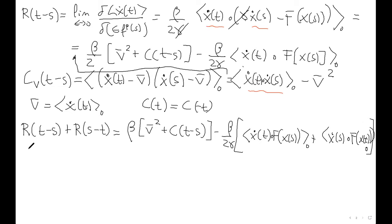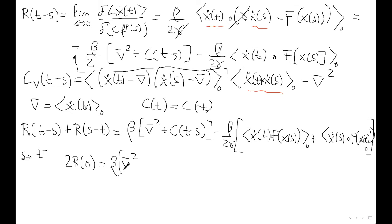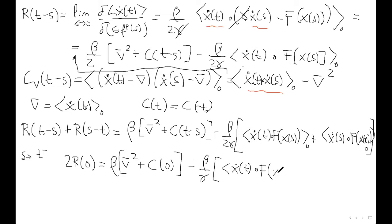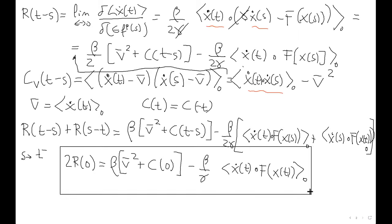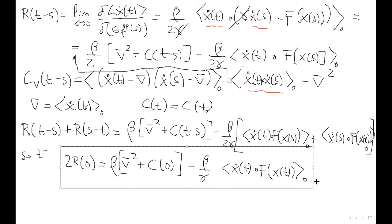Now I take the limit when s goes to t from below. This gives 2R(0), and t equals s makes the response at zero equal to beta times (v-bar squared plus C(0)) — where C(0) is the zero-lag velocity autocorrelation — minus beta over gamma times the Stratonovich average of x-dot(t) with F(x(t)) at the same time, all in the unperturbed system. This is the main equation.